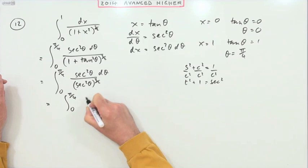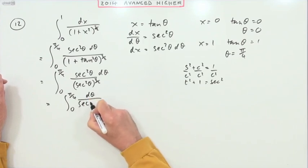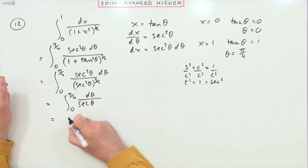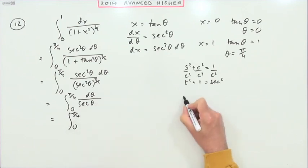So you're left just with 1 sec underneath, which means that's the same as the integral from 0 to π upon 4 of cos θ dθ, because sec is 1 over cos.